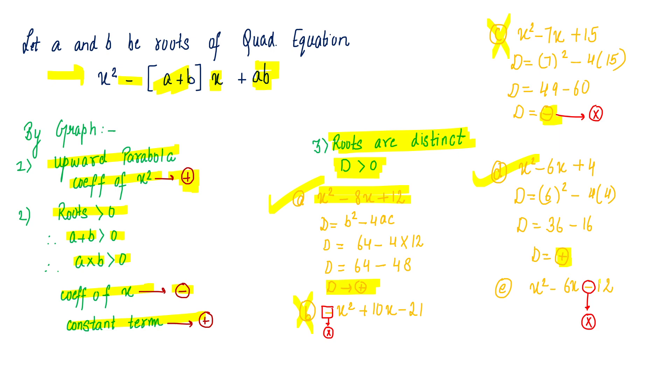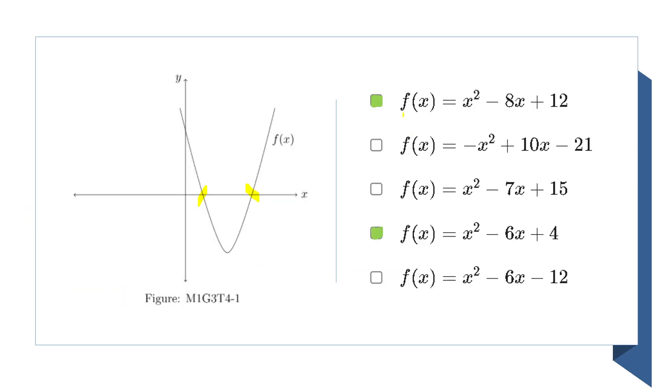E is rejected because the constant term is negative. And according to the analysis which we have done, our constant term should be positive. So the correct answer of this question will be A and D.